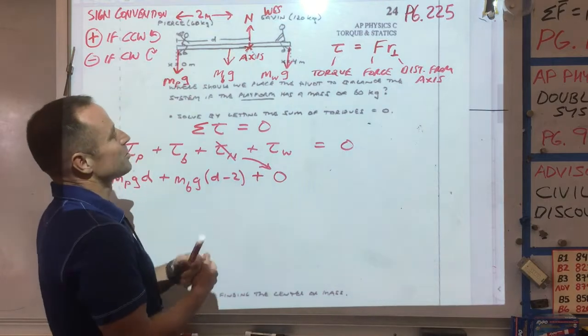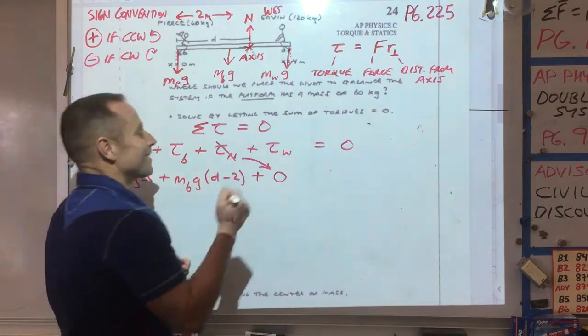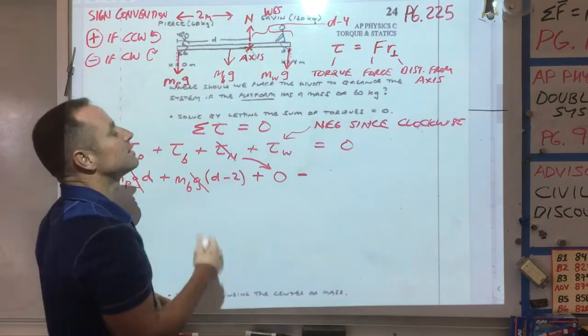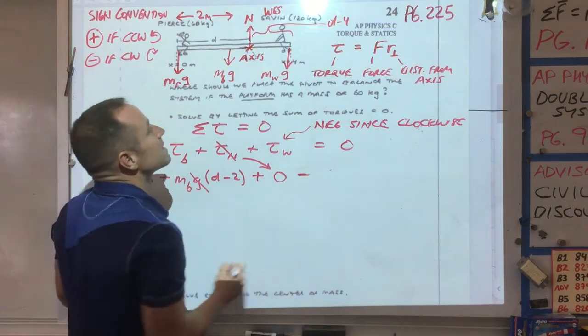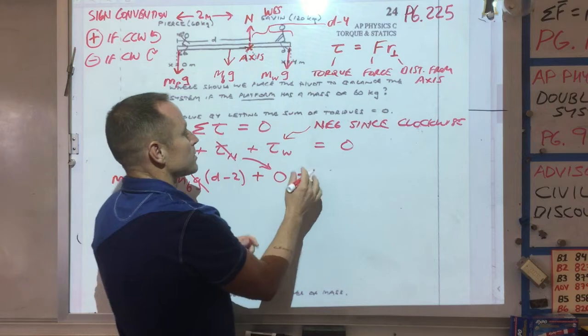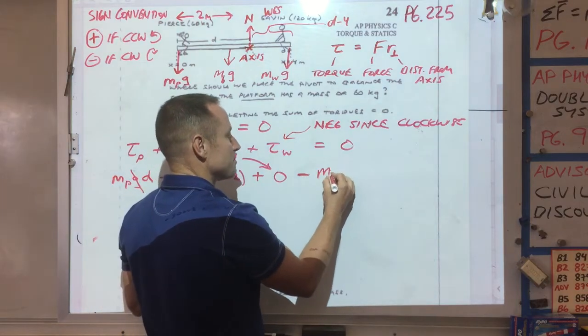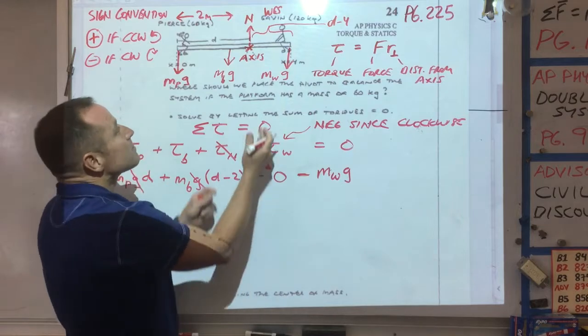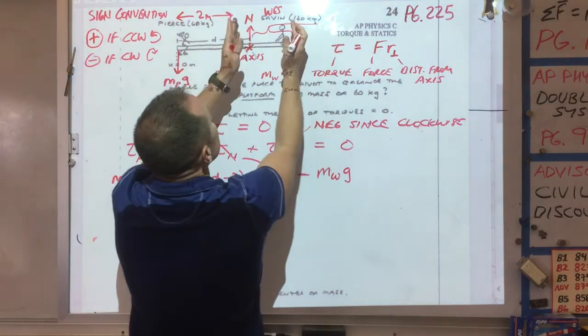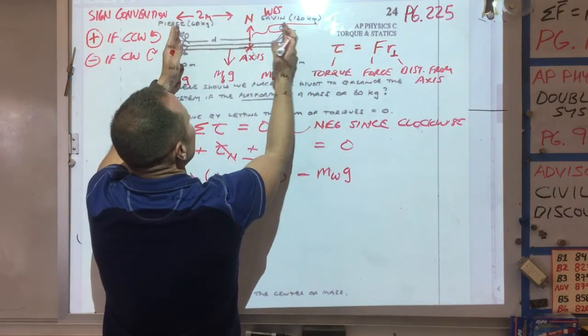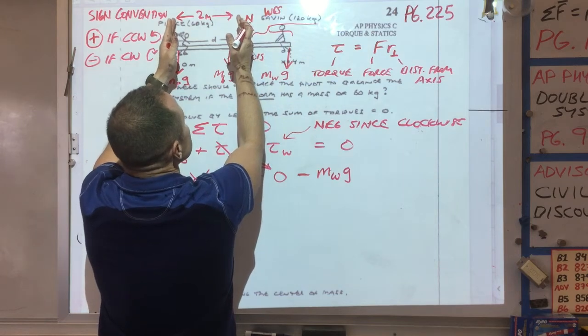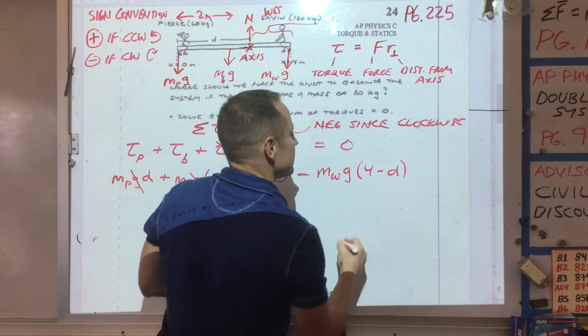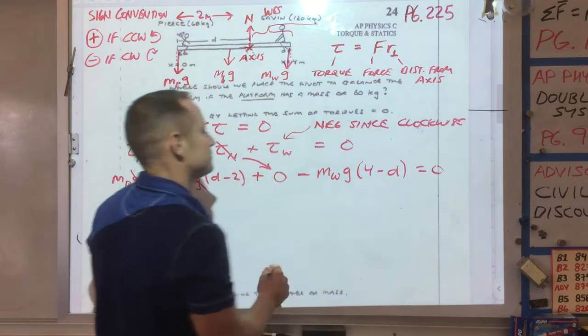So long story short, Wes's torque needs to be negative because it's clockwise. So Wes has a negative torque. Wes's force is mass of Wes times g. That's his weight. And then we need this distance here. This whole thing is 4, and this distance is d. So this needs to be 4 minus d equals 0.